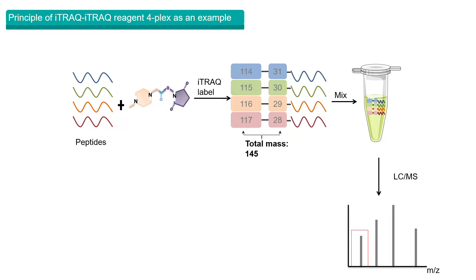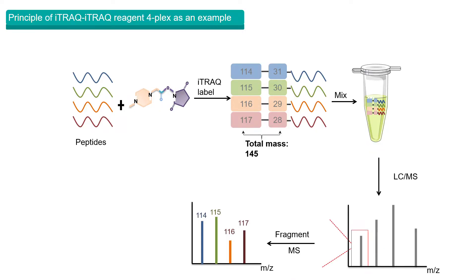Samples of the same peak are collected to perform a second stage mass spectrometry, in which the bond between the balance group and the peptide reactive group is broken, and the balance group is lost. The same peptide with different isotopic labels produces different masses of reporter ions, and the reporter ions exhibit different peaks. Quantitative information of the same peptides between different samples can be obtained by analyzing related data with software and databases.